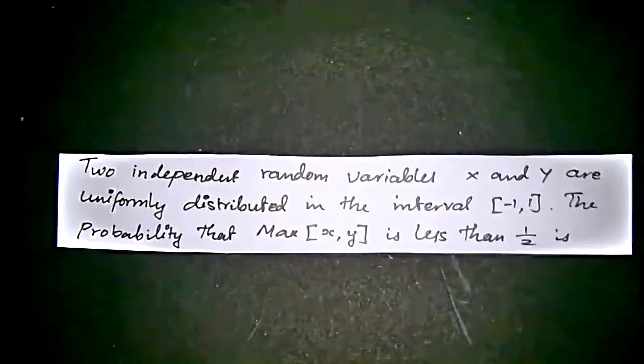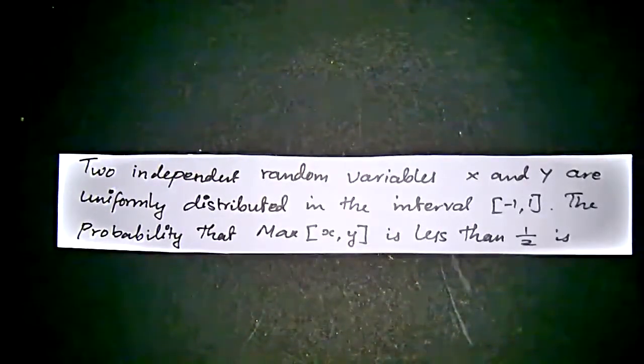We have to find the probability in the interval minus 1 to 1, and it should be the maximum value for x comma y. The problem is to find the probability of maximum x comma y. How are we going to do that?